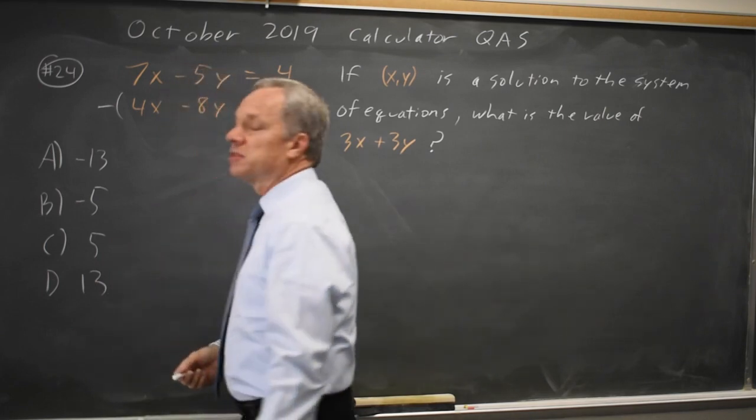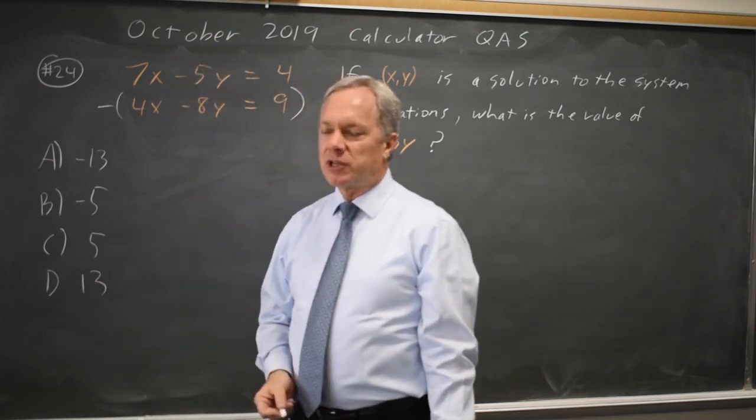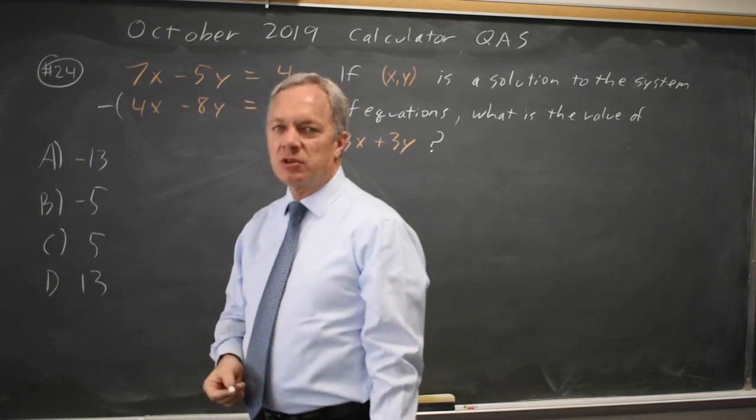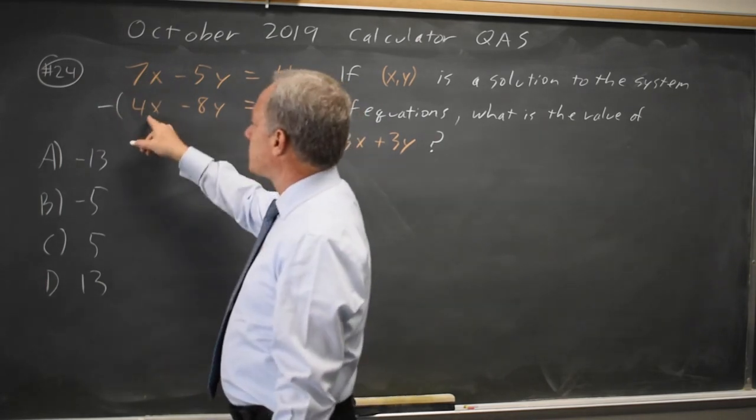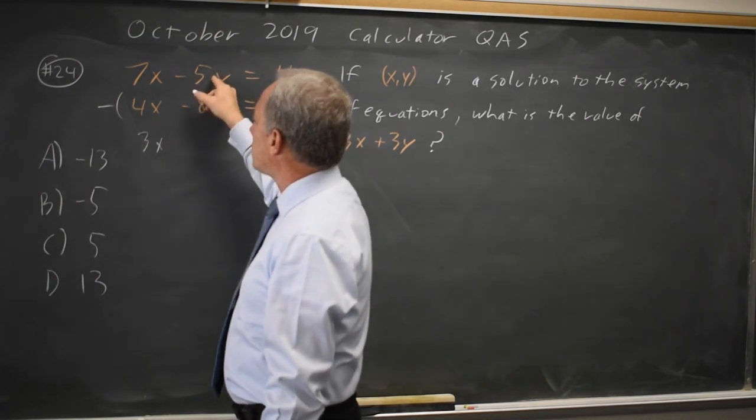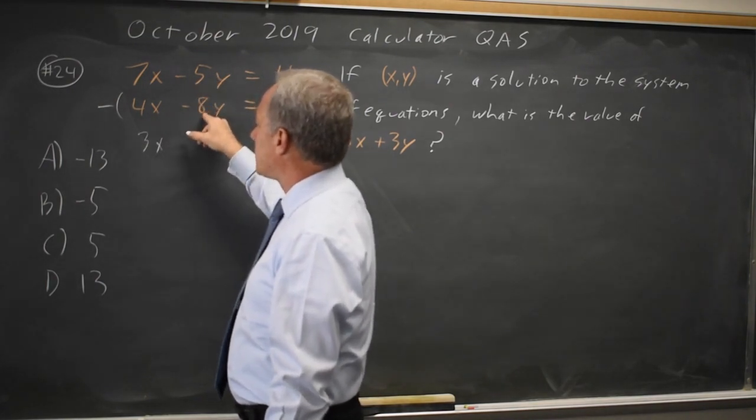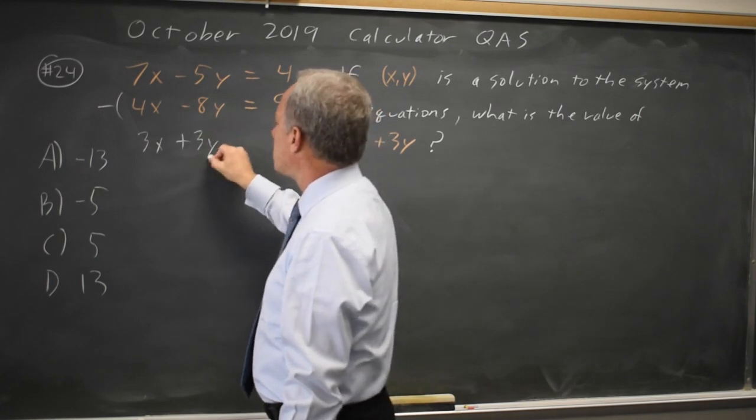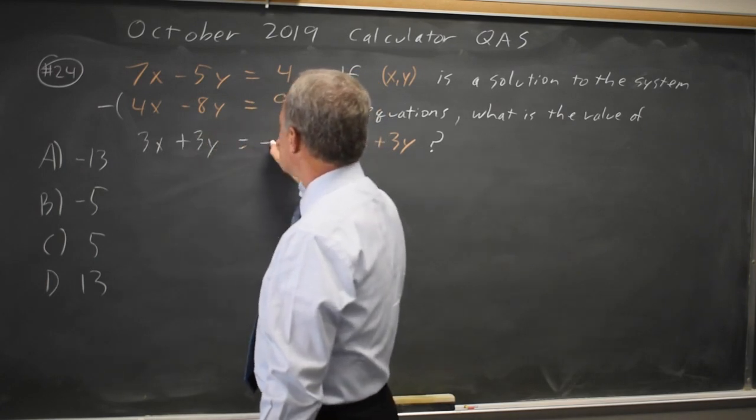In this case, if you subtract the second equation from the first equation, rather than doing what you normally do to solve, 7x minus 4x is 3x. Negative 5y minus negative 8y is negative 5y plus 8y, which is positive 3y, equals 4 minus 9, which is negative 5.